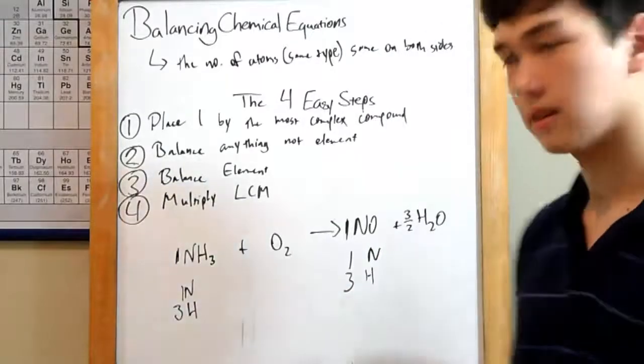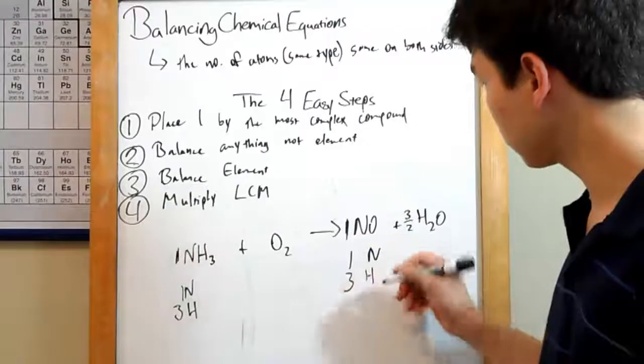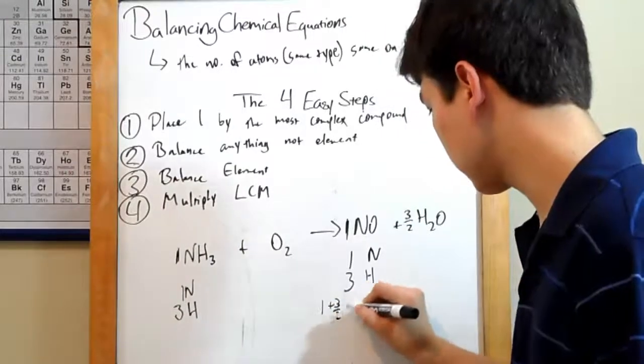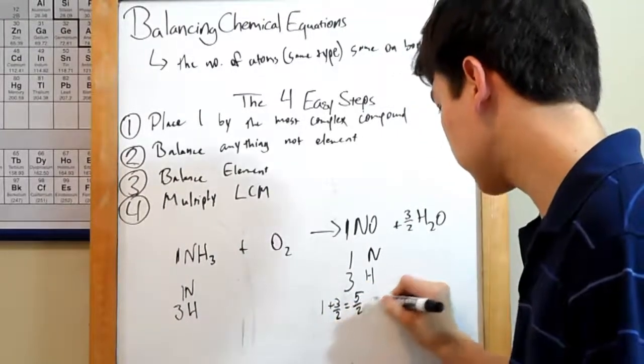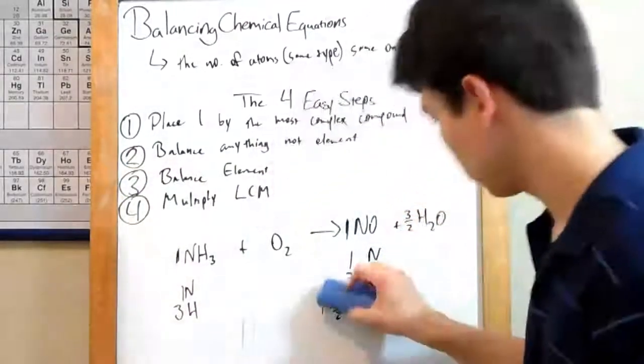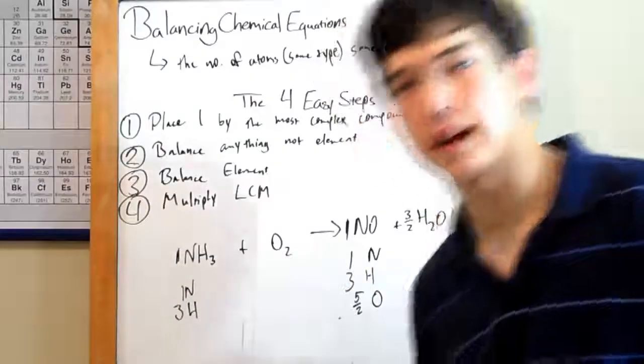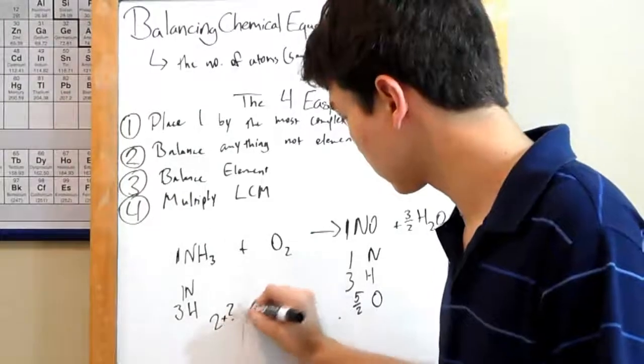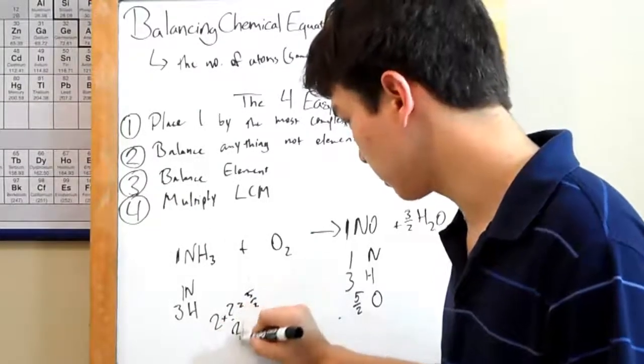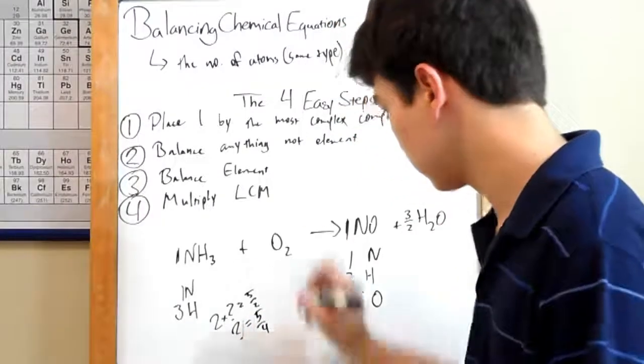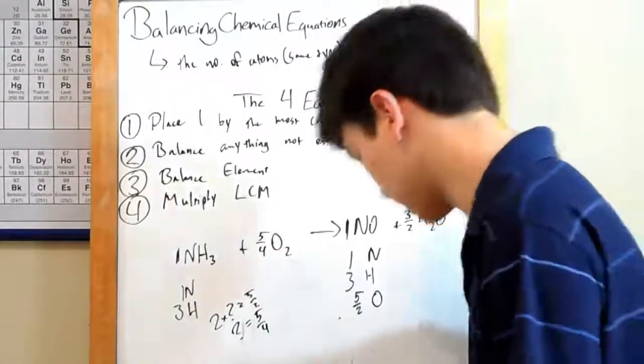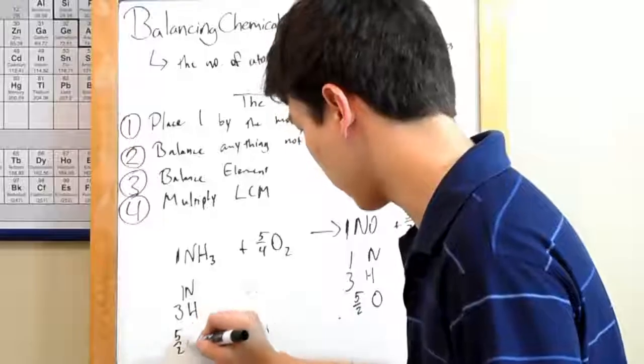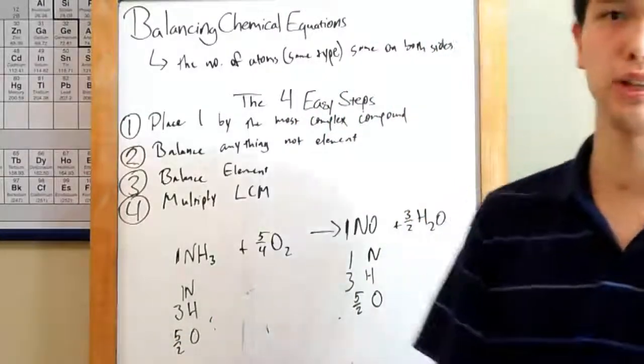And that leaves us with oxygen again. Well, one times one is one oxygen, and three halves times one is three halves. One plus three halves gives you five halves. Five over two oxygens on this side. Interesting. Now we need five halves of oxygen on this side. What times two is five halves? Again, some simple algebra, and we realize that we need five fourths. So, we just write that in. Five fourths O2. And now, everything's balanced. We have one nitrogen, three hydrogens, and five halves of oxygen on both sides.